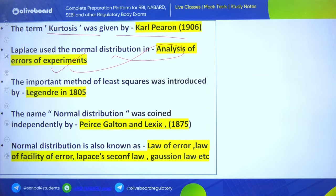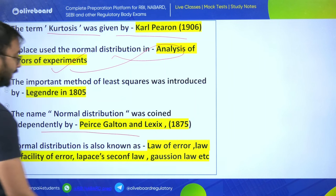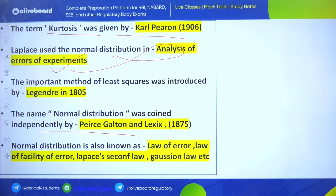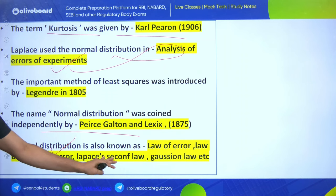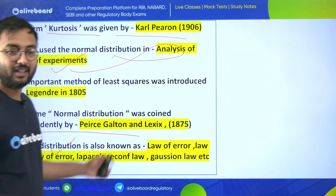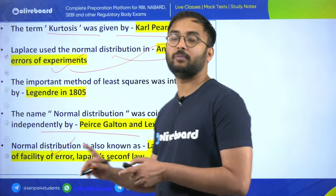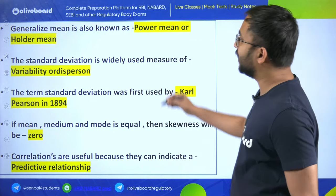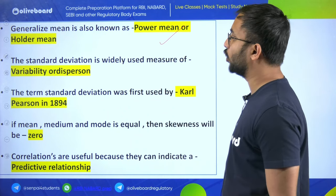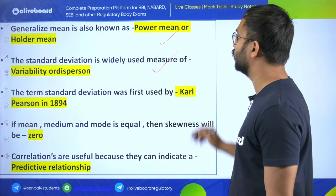When fertility gradient in land is in two directions, the experimental design used is Latin Square Design. The most commonly used measure of central tendency is arithmetic mean. Cumulative frequency is also known as ogive. The term kurtosis was given by Karl Pearson. Laplace used normal distribution in analysis of errors of experiments. Normal distribution is also known as law of error, law of facility of error, Laplace's second law, and Gaussian law.